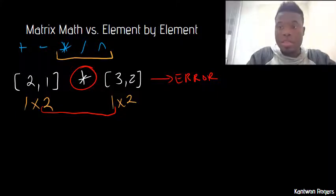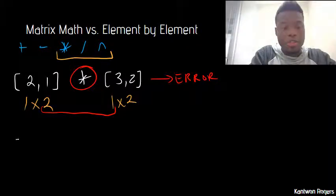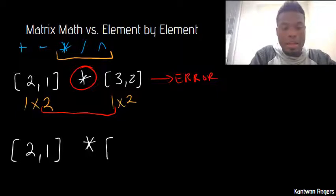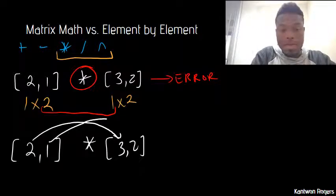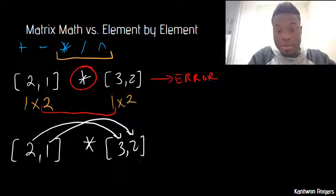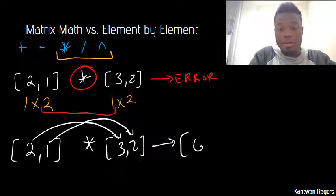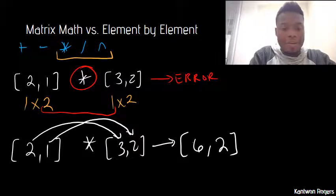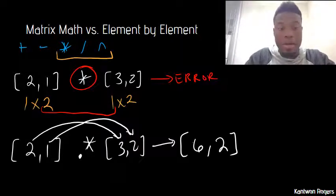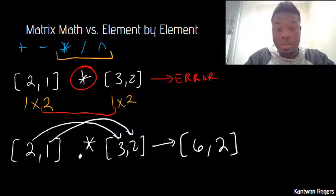Now let's say we wanted to tell MATLAB, hey, I don't want to do matrix operations. I want to do element by element multiplication. By element by element, I mean I want to take the first number, multiply it by the first number of the other vector, the second number of this vector, and multiply it by the second number of that vector. Therefore, I would produce back a vector that the first number will be six and the second number will be two. In order to tell MATLAB, hey, do element by element operations instead, I have to add a dot or period in front of my multiplication sign.